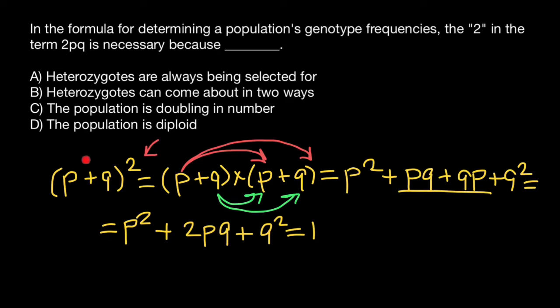Because in this population, we have only two alleles which can produce three genotypes. For example, p stands for the dominant allele A, and q stands for the recessive allele a.